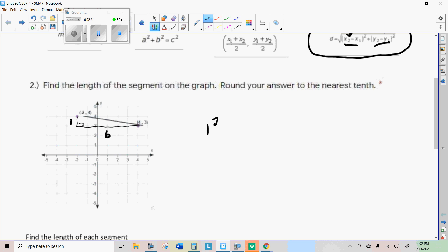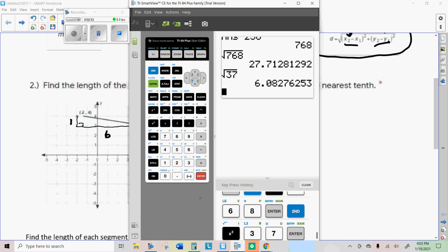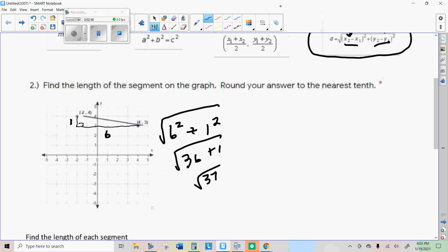So, I'm going to do my one squared and my six squared. My six squared is the difference between the x coordinates. My one squared is the difference between the y coordinates. I'm going to square those, add them together, and then do the square root of that. So, that's 36 plus one, which is 37. And the square root of 37 is about 6.1, if I round to the nearest tenth.